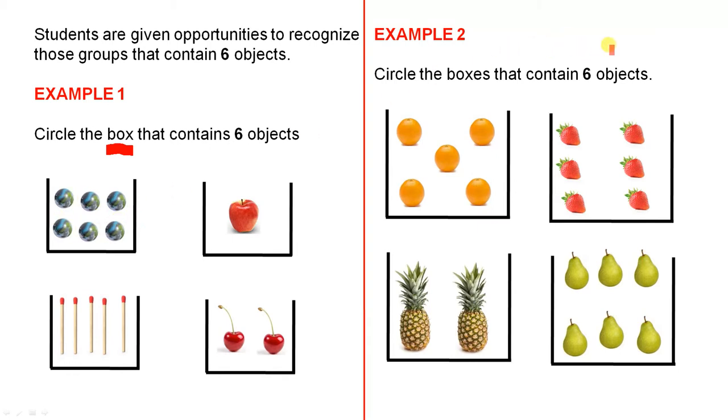Example 2, circle the boxes that contain 6 objects. When students hear the word boxes, they'll probably know that there'll be more than one box and they'll be correct. So they'll be circling this one and this one.